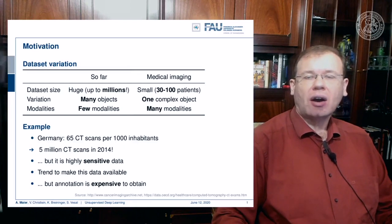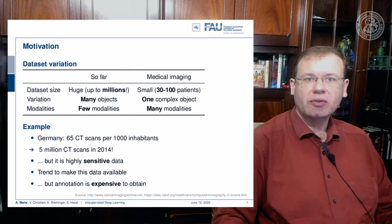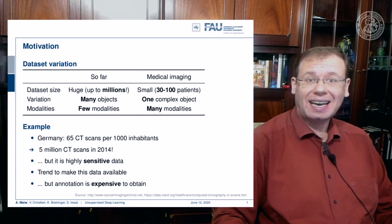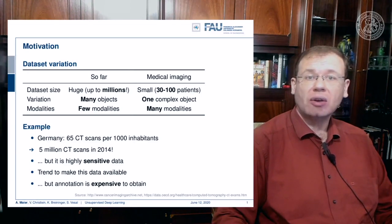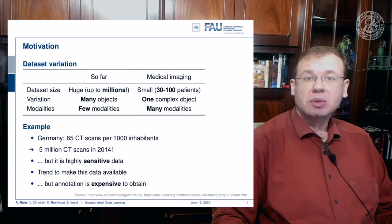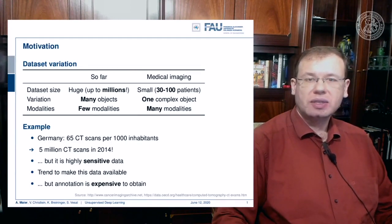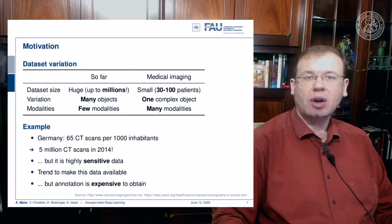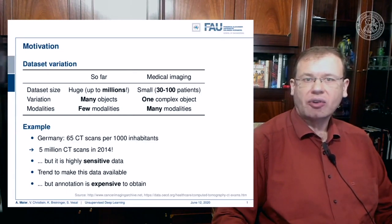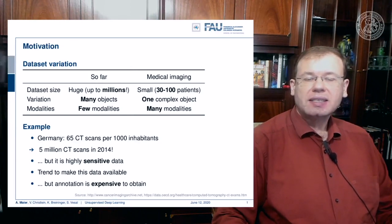Well, these data are of course sensitive and contain patient health information. For example, if you have a head CT scan you can render the surface of the face and use an automatic system to determine the identity of that person. There are also non-obvious cues: the surface of the brain is characteristic for a certain person, and you can identify persons by the shape of their brain to an accuracy of up to 99%.